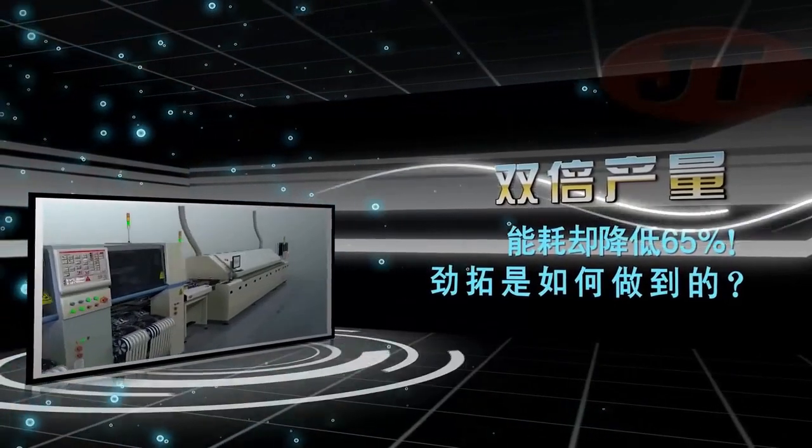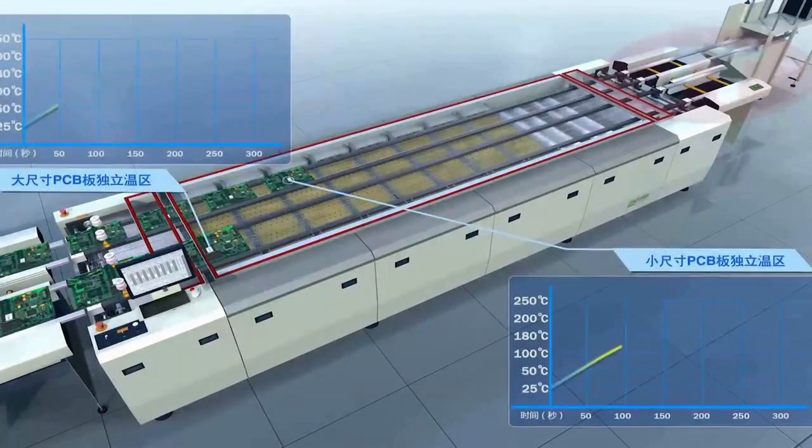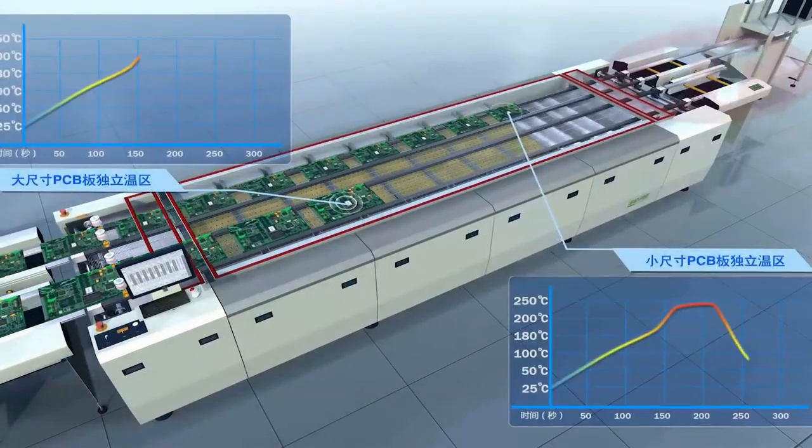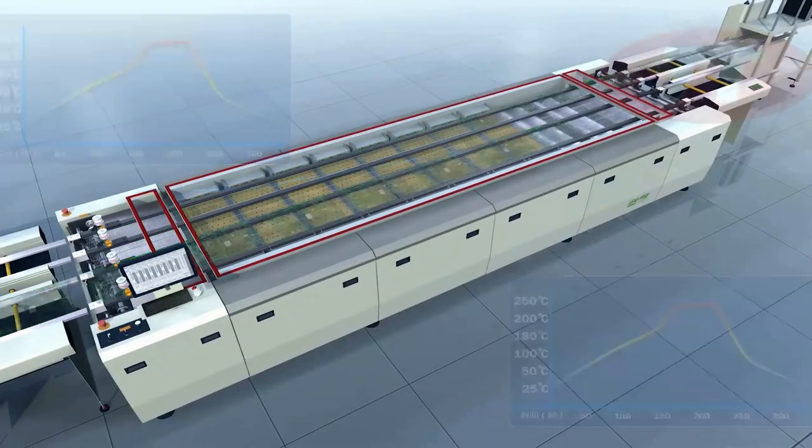For higher efficient energy savings, while increasing output with the same footprint area of a single oven, a dual-lane oven can be implemented in line with two independent placement machines, offering the flexibility expected from Juki.